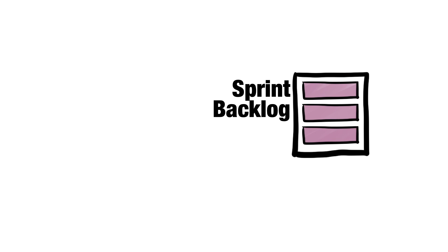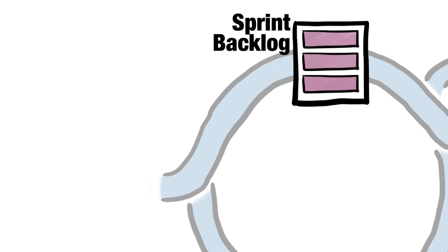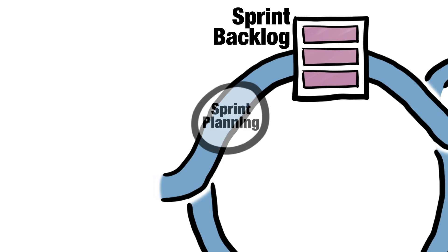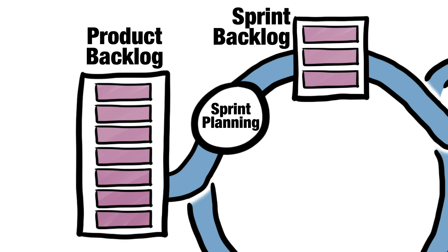The Sprint Backlog is a list of things that the development team will work on during the Sprint. It's created once per Sprint, and the event where it's created is the Sprint Planning Meeting. The Product Backlog — the master list of things to do — provides the input.